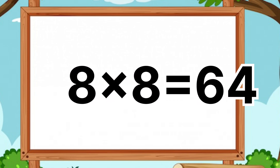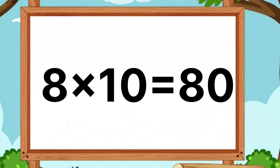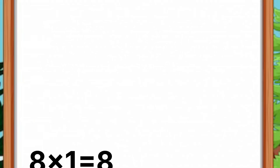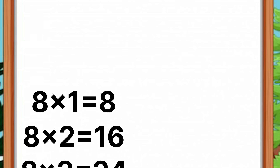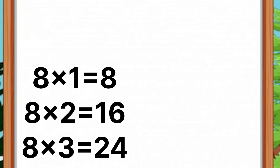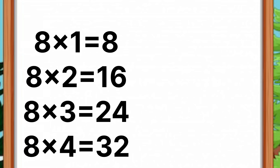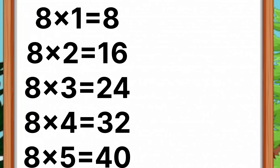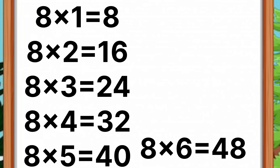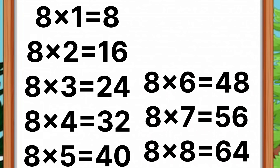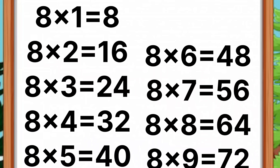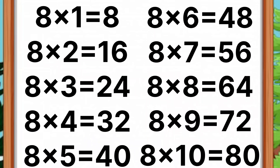Eight eights are sixty-four. Eight nines are seventy-two. Eight tens are eighty. One more time. Eight ones are eight. Eight twos are sixteen. Eight threes are twenty-four. Eight fours are thirty-two. Eight fives are forty. Eight sixes are forty-eight. Eight sevens are fifty-six. Eight eights are sixty-four. Eight nines are seventy-two. Eight tens are eighty.